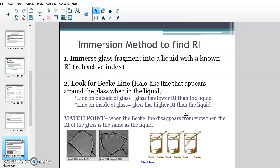What you do is an immersion method test to find the refractive index. A lot of times we abbreviate refractive index with RI. So you immerse the glass fragment into a liquid that you already know the refractive index for. All the liquids that are out there - water, glycerin, olive oil, vegetable oil - they've already tested the refractive index for all of those liquids. So what you would do is find one that you know the refractive index for, put the glass into it. You put the liquid in a petri dish, put the glass into it, and put it underneath a microscope. And then you look for what's called the Becky line. The Becky line is a halo-like line that appears around the glass when it's in liquid. Here's two examples down here.